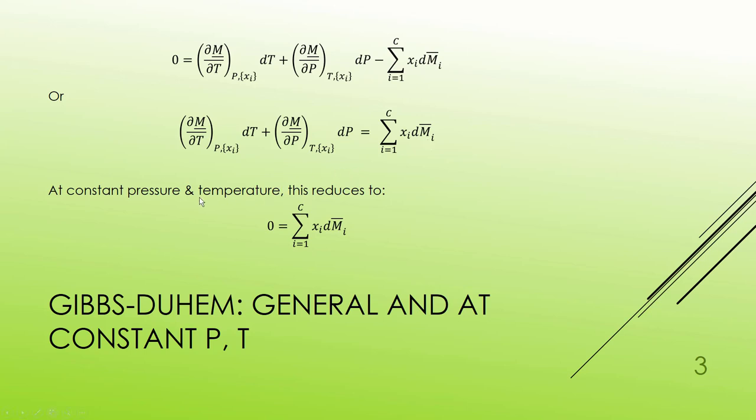If I'm fixing the temperature and pressure, then I can say that the combination of mole fractions times change in partial molar quantities will be zero for the sum of all components. And this is the general form of the Gibbs-Duhem equation.